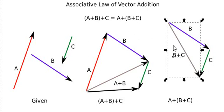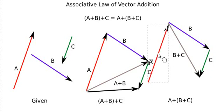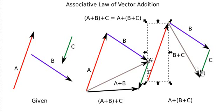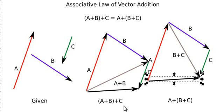Now I have to add vector a to this resultant to obtain the complete sum a plus b plus c. To add vector a to the resultant of vector b plus c, I bring vector a into the scene such that the head of vector a is at the tail of the resultant of b plus c. By the triangle law, the resultant will be the vector joining the tail of a to the head of vector b plus c. Completing this triangle, I get the same result as obtained by adding a plus b first and then c to the resultant.